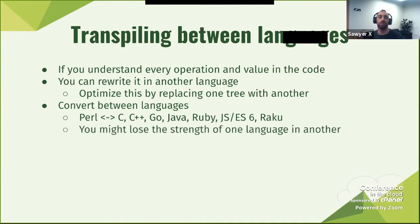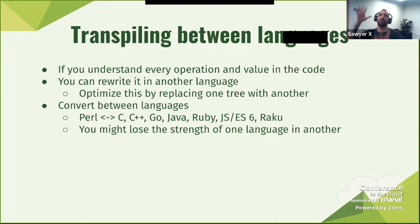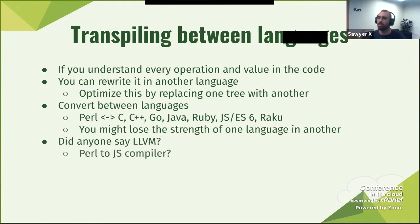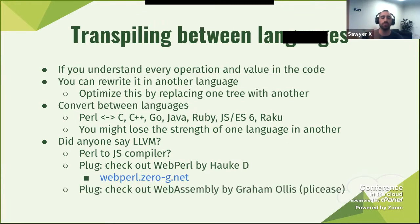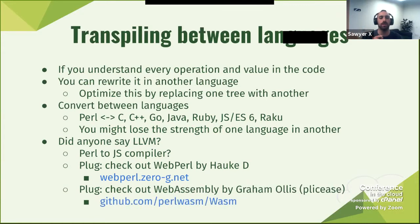Of course, you might lose some of the strength of one language when converting to another. Converting Raku and outputting Perl would require a lot of effort. But converting Perl to Raku would probably be easy because Raku can express Perl fairly easily. Converting Perl to C would require writing a lot of C. Good to note here: WebPerl by Hauke, available at WebPerl.org — that is already available. And Graham also gave a talk about WebAssembly that you can find there.